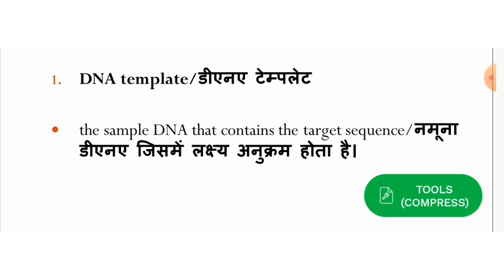That particular sequence signifies the particular organism — plant, human being, dog, or cat. It is a particular person's signature. We know what it is called — a DNA fingerprint.